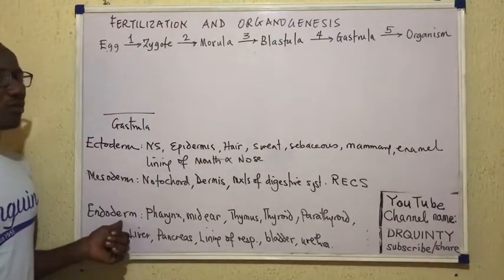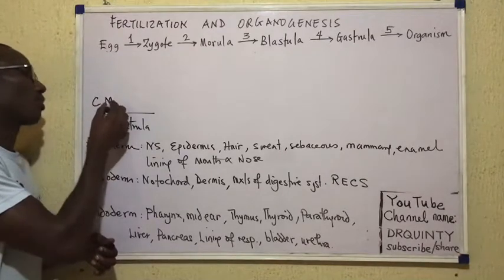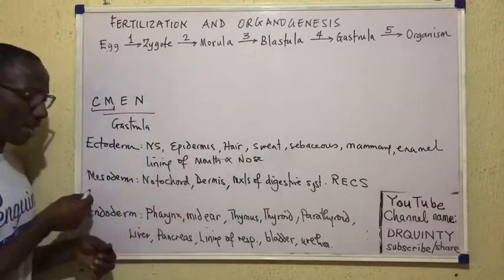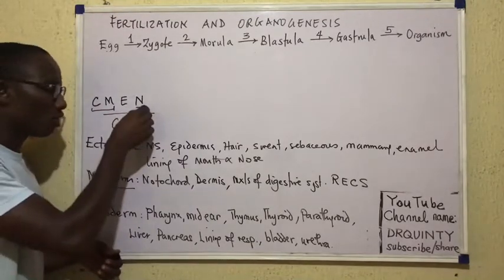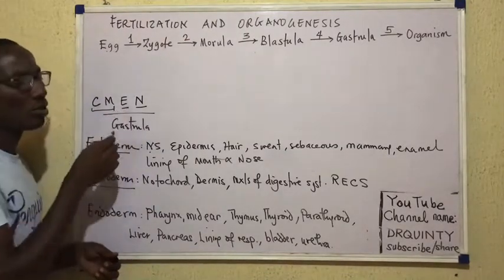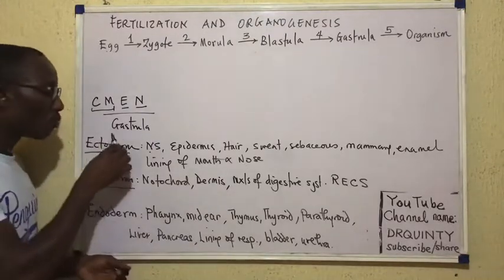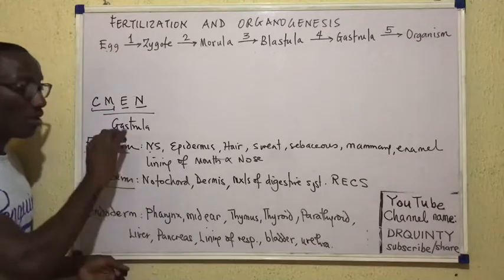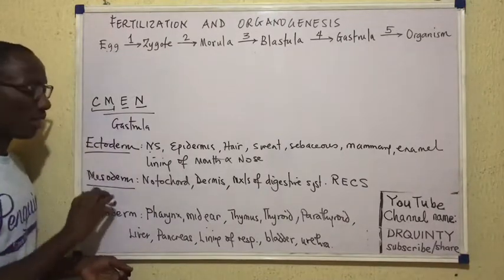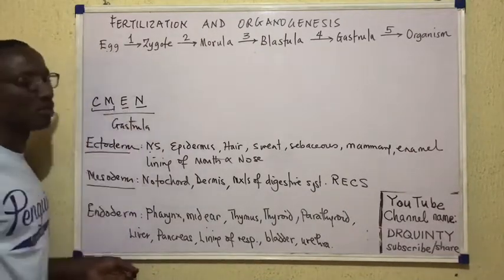For the endoderm — just before I discuss it — we know there are four main tissue types: connective tissues, muscular tissues, epithelial tissue, and nervous tissue. Connective and muscular tissues are mesodermal in origin. Nervous tissue and the nervous system are ectodermal in origin. Epithelial tissues are typical in that they arise from all three germ layers. So if asked which germ layer epithelial tissues come from, the answer is all three. The only tissue type that comes solely from the endoderm is epithelial tissue.